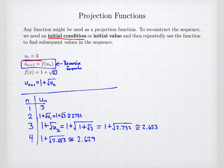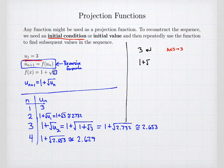There's a useful calculator trick: if your calculator has an answer-recall button, you can compute sequence values efficiently. On a TI-83, enter the initial value 3 and press Enter — that becomes the stored answer. Then calculate 1 plus the square root of ANS, which uses the stored answer. Press Enter, and it gives the second value, approximately 2.732.